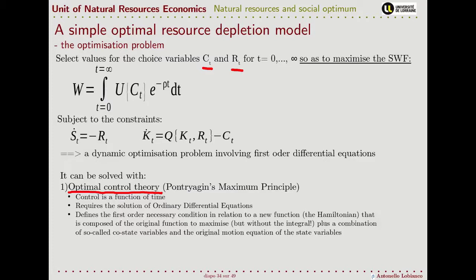The optimal control theory gives us the first order necessary conditions, but no longer in terms of the original function, but in terms of a new function that we call the Hamiltonian, and it has very strong parallelism with the Lagrangian function. Because as the Lagrangian function is made of the original function plus, for each constraint, the Lagrangian multiplier that multiplies the constraint, in a very similar way,